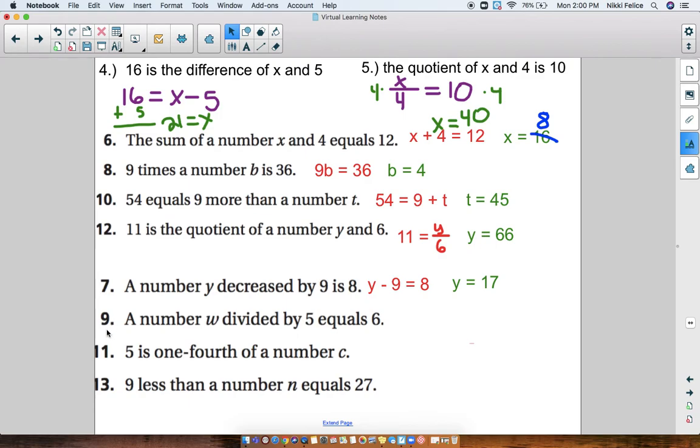Number 9 says that a number W divided by 5 equals 6. Well, that one's pretty straightforward. You should have W divided by 5 equals 6. When we solve for W, we use the inverse operation. We're going to multiply, and you should get that W equals 30.